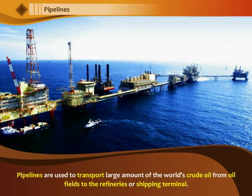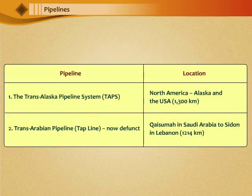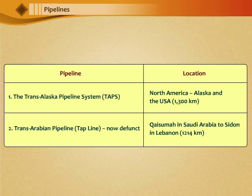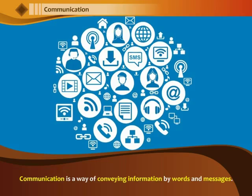The major pipelines include: 1. The Trans-Alaska Pipeline System (TAPS), and 2. Trans-Arabian Pipeline (TAPLINE), now defunct.